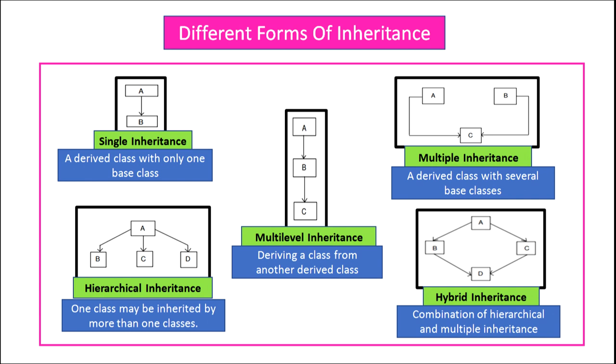Hybrid inheritance is a combination of hierarchical and multiple inheritance. You can see in the figure, A is the base class and B and C are the child classes of the base class A, and D again is the child class for which B and C are the base classes. So this is hybrid inheritance.